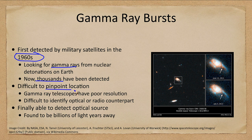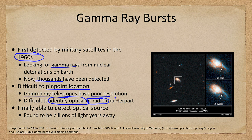It is difficult to pinpoint the location of gamma ray bursts — very hard to see exactly where they are — because gamma ray telescopes have very poor resolution. You might think that short wavelengths give you really high resolution, and gamma rays are among the shortest wavelengths. However, gamma rays are impossible to focus. So even though they would theoretically have high resolution, since you cannot focus them, they are unable to take advantage of that resolution, making it hard to identify an optical or radio counterpart.